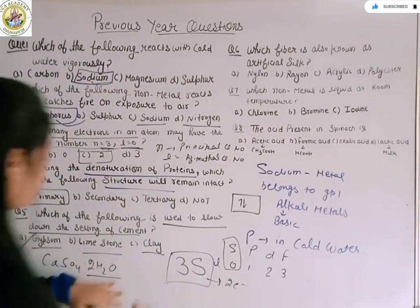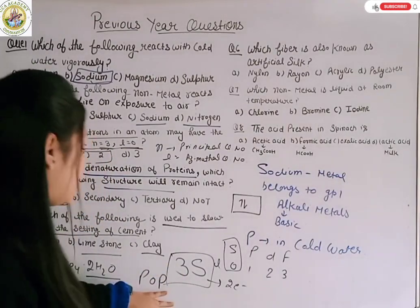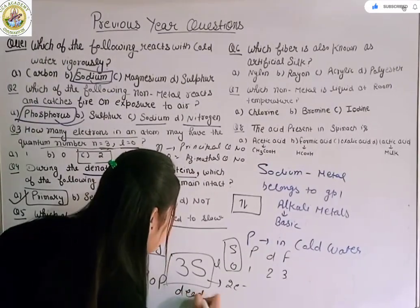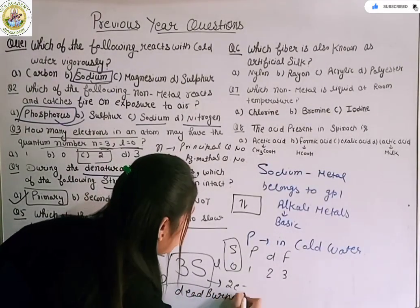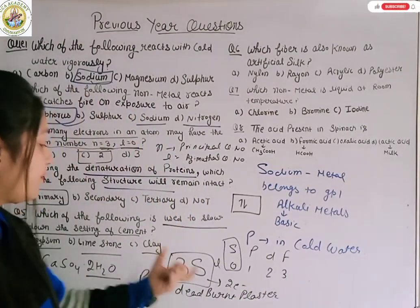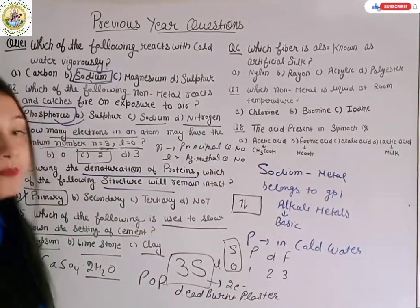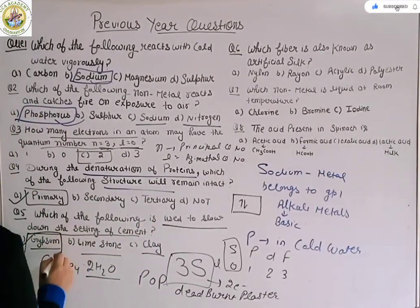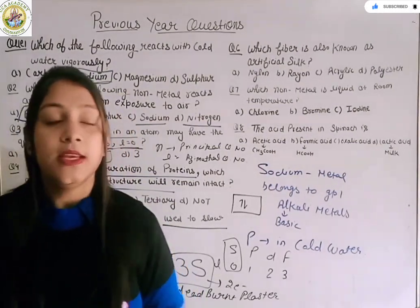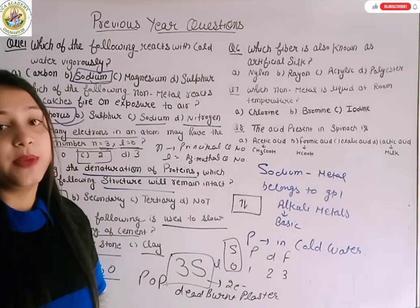So gypsum is used. If you heat gypsum, this will be plaster of paris. Then if you heat further, you get dead burnt plaster. Dead burnt plaster is CaSO4. So in cement, which is dry, the right option is gypsum to increase the drying time or the settling time.